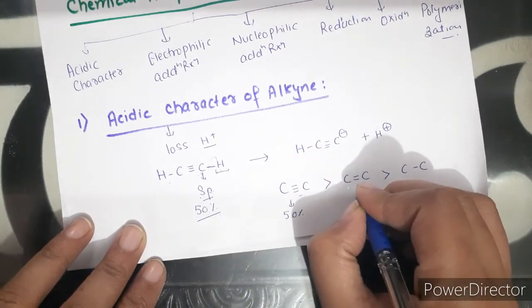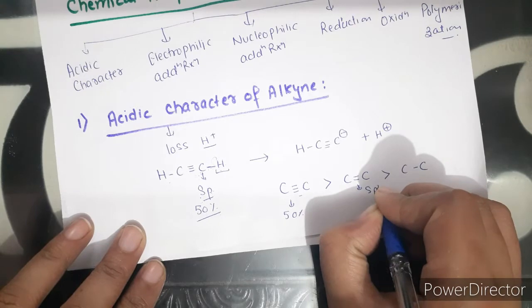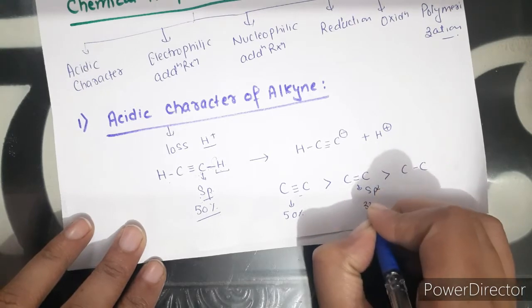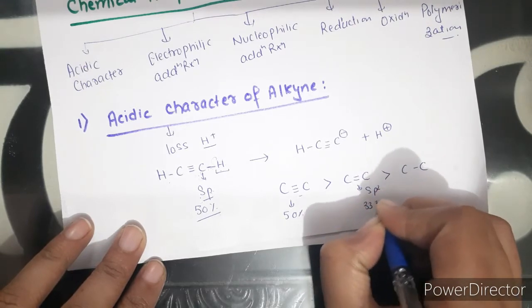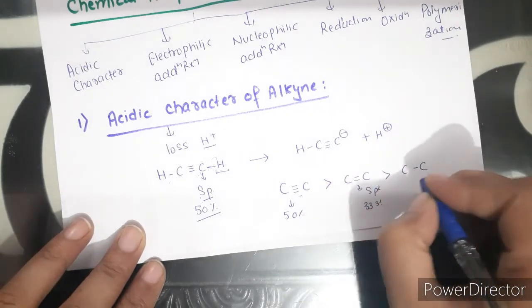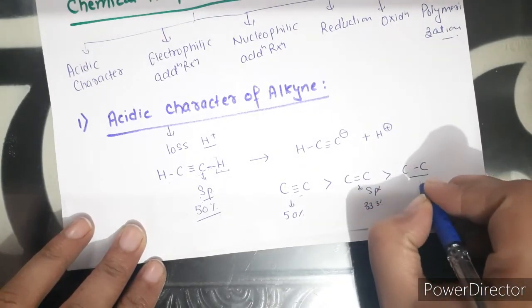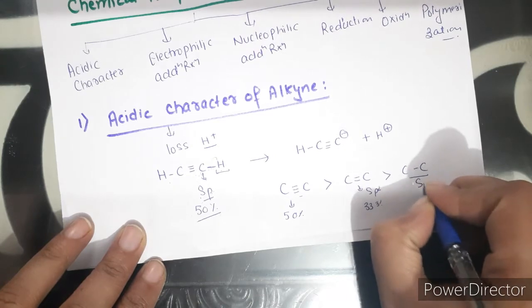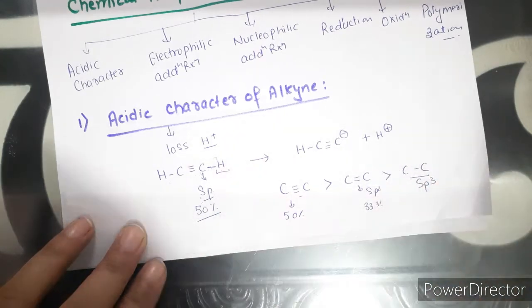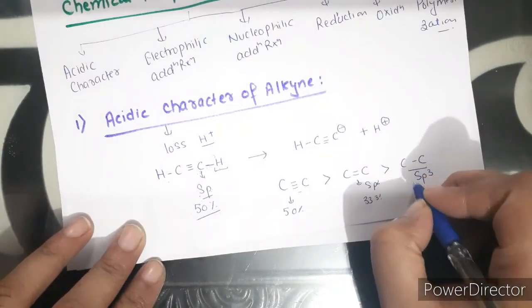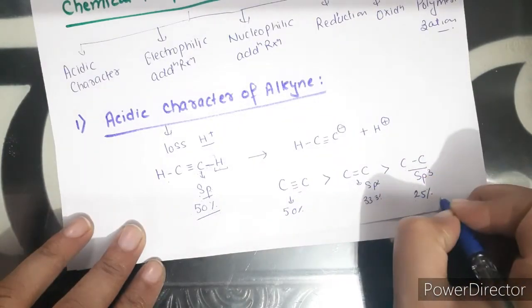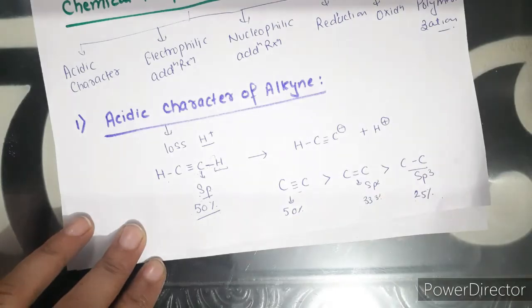In the case of alkenes, hybridization is sp², which means 33.3% s-character. And in the case of alkanes, hybridization is sp³, so s-character is 25%. Therefore the order of acidity is: alkynes (sp, 50% s-character) > alkenes (sp², 33.3%) > alkanes (sp³, 25%).